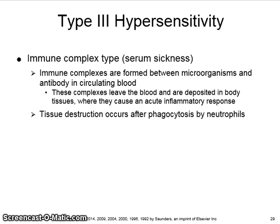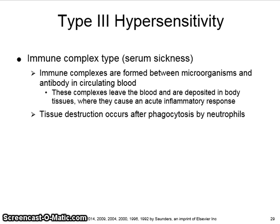Immune complex Type 3 hypersensitivity is when immune complexes are formed between microorganisms and the antibody, which is circulating in the blood. These complexes leave the blood and are deposited in body tissues, where they cause an acute inflammatory response. As a result of phagocytosis, neutrophils die releasing lysosomal enzymes, which cause tissue destruction.